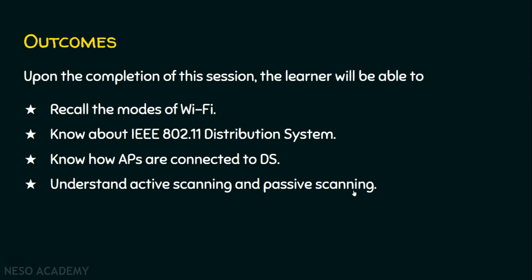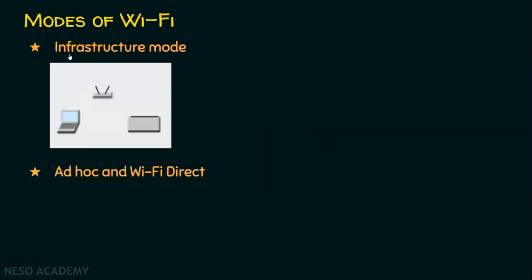We will recall the modes of Wi-Fi. We have basically two modes of Wi-Fi. One is the infrastructure mode and the other one is the ad hoc mode. In infrastructure mode, if a client wants access to any other device, it has to contact the access point. There is always a fixed infrastructure and the access point is the centralized system. In ad hoc mode, there will not be any fixed infrastructure. Nodes are mobile and whenever a node travels, it selects the appropriate access point available at that moment. In ad hoc, there is no fixed infrastructure.